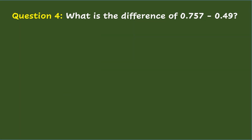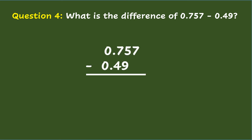Question 4: What is the difference of seven hundred fifty-seven thousandths minus forty-nine hundredths? To get the difference of decimals, arrange the decimals vertically. Align the decimals based on the place value as well as the decimal points. Add zero to fill in the vacant place value in forty-nine hundredths. Then subtract from right to left just like in whole numbers. Beginning with the thousandths place: seven minus zero is seven. Next, five minus nine cannot be done since the minuend is smaller than the subtrahend, so you will borrow one from the next place value. Seven minus one is six tenths.